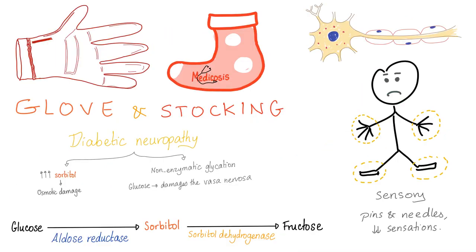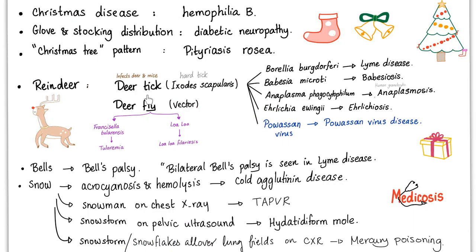Snow makes you feel cold. Do not forget the glove and stocking distribution of diabetic neuropathy. Diabetic neuropathy has many theories trying to explain it — one of the theories is accumulation of sorbitol. The patient will describe the problem as pins and needles, with decreased sensation in the glove and stocking distribution. Please do not confuse this with syringomyelia, because syringomyelia has a cape-like distribution. If you want to learn about all of this, please check out my video called Christmas in medicine.